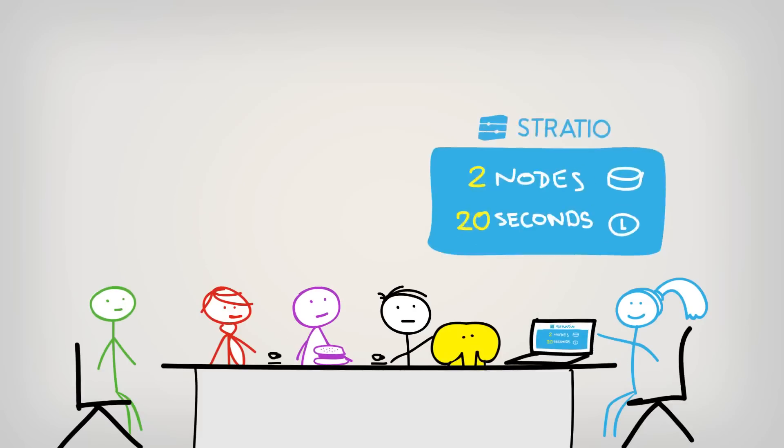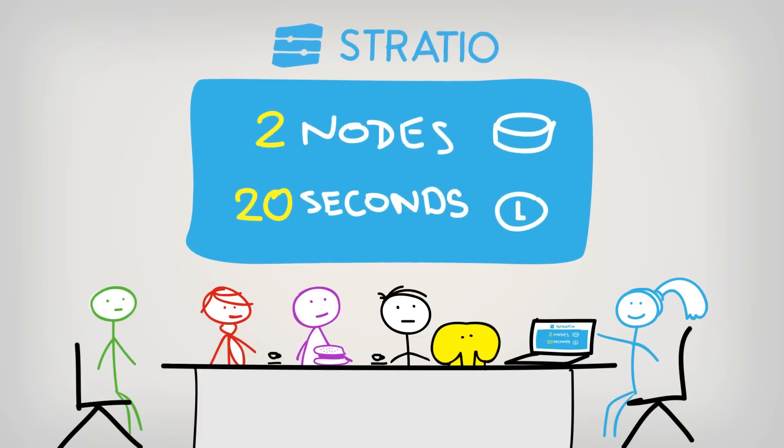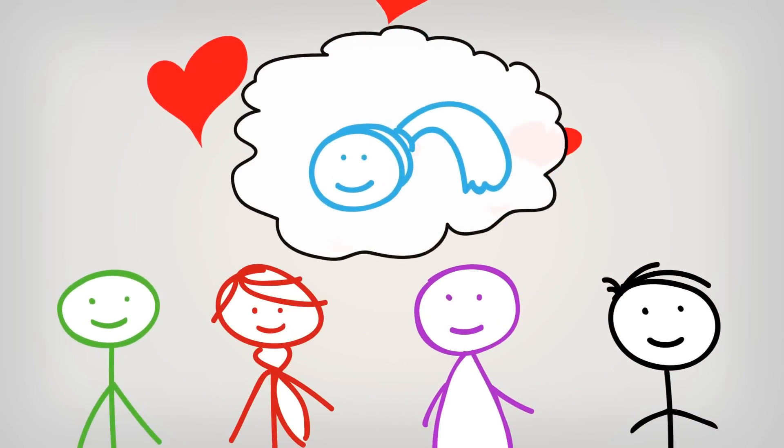How about a NoSQL approach requiring two nodes only? It would be Hadoop-free and capable of cranking out answers at a speed of 20 seconds per query. No more elephants in the room.